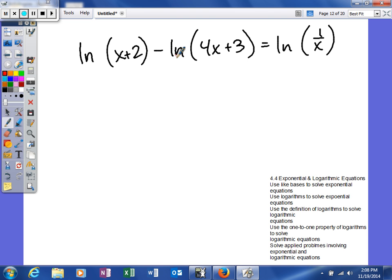So I'm going to take these two logarithms and I'm going to put them together. So I'll get the natural log. x plus 2 is going to go on the top and 4x plus 3 will go on the bottom. And the reason that's going to happen is because of the coefficients.